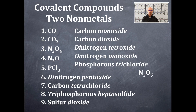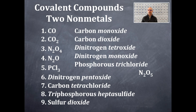Number seven is carbon tetrachloride. Carbon — there's only one because there's no prefix in front, so it's assumed to be one; you have a single carbon. The second element is chlorine. How many chlorides? Tetra — which represents four. So you're going to have one carbon and four chlorines. That's CCl4, carbon tetrachloride.